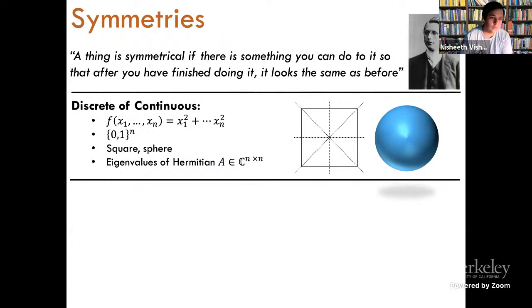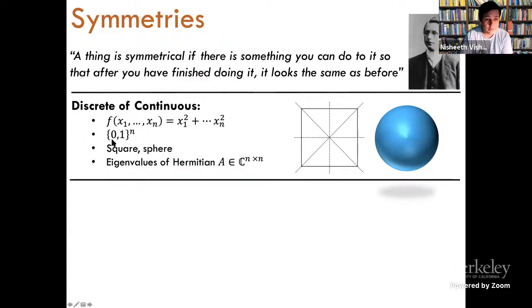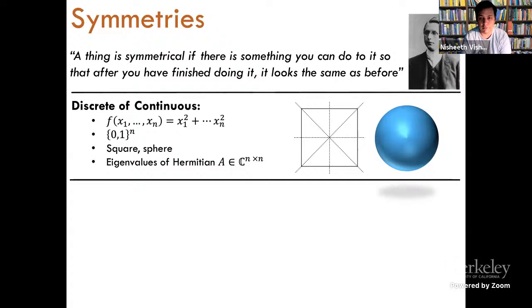To give some examples — we have already seen many, but let me give a few more basic ones. You can think of a polynomial in variables x1 to xn, which is x1 squared plus dot dot plus xn squared. This is a symmetric polynomial: permuting its variables does not change the value. Perhaps the audience is also familiar with sets like the Boolean hypercube, which has these symmetries in coordinates.